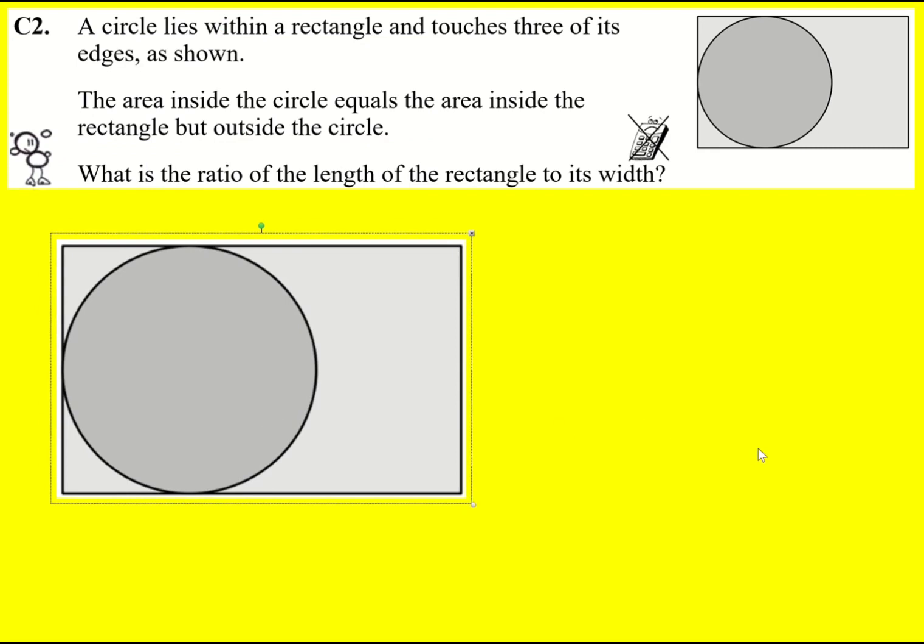We have a circle in a rectangle and we're told the area inside the circle, that's the darker shaded area, is equal to the area inside the rectangle but outside the circle, the lighter shaded area. We're asked for the ratio of the length of the rectangle to its width.